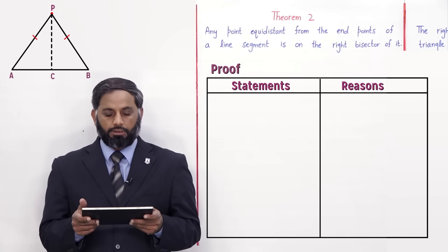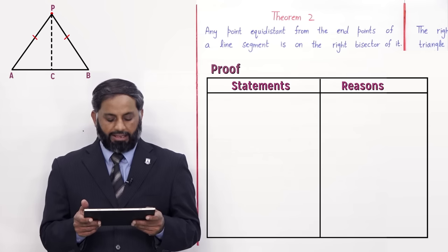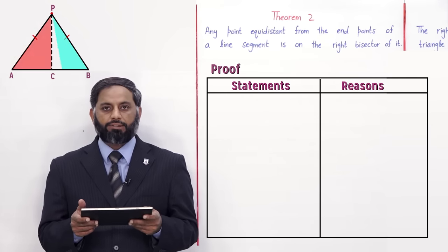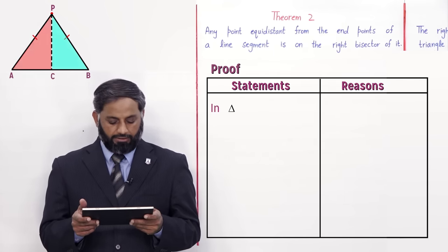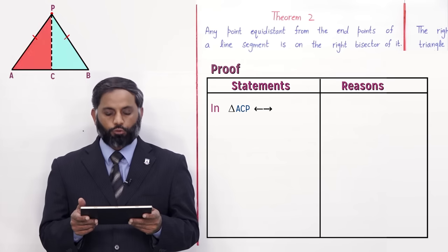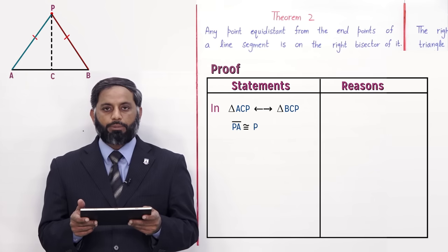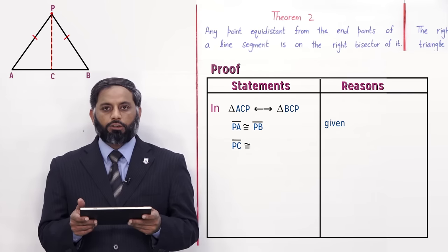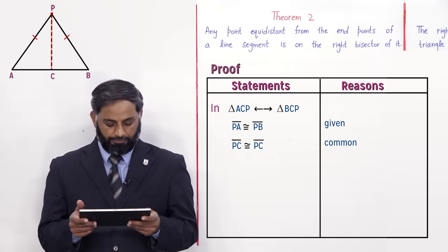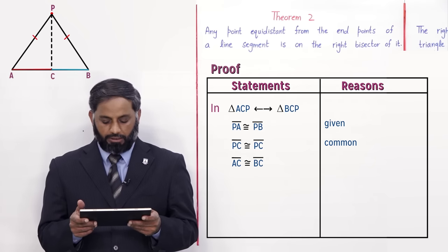Now let's prove this. There are two triangles here: triangle ACP and triangle BCP. We take their correspondence: triangle ACP corresponds to triangle BCP. PA is congruent to PB — reason: given. PC is congruent to PC — reason: common, as it is common to both triangles. AC is congruent to BC — reason: construction.